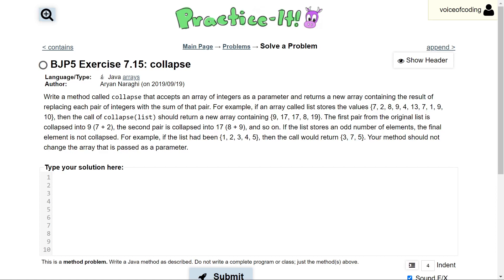Today we'll be going over exercise 7.15, collapse. The problem reads, write a method called collapse that accepts an array of integers as a parameter and returns a new array containing the result of replacing each pair of integers with the sum of that pair.